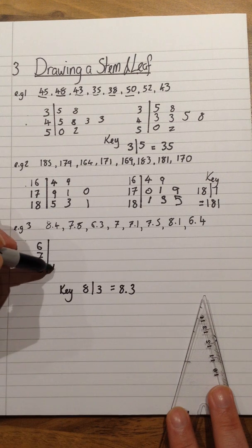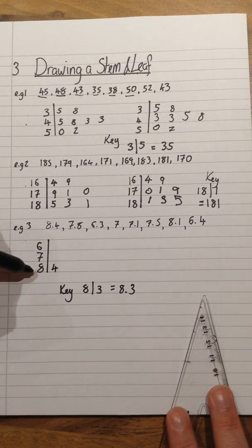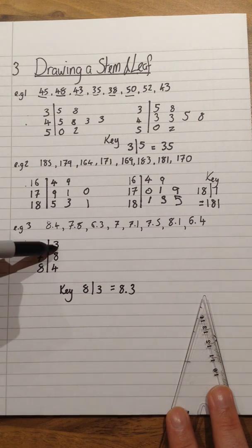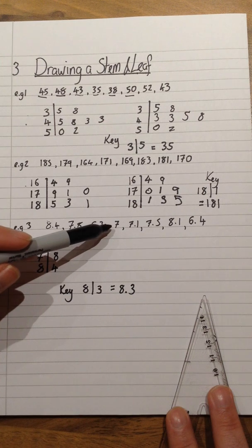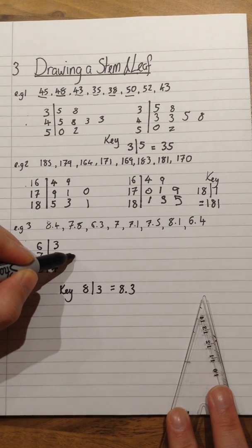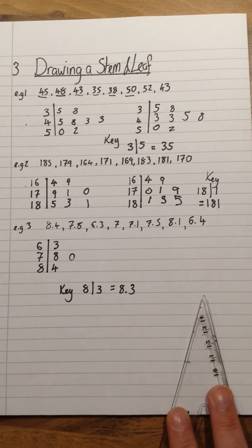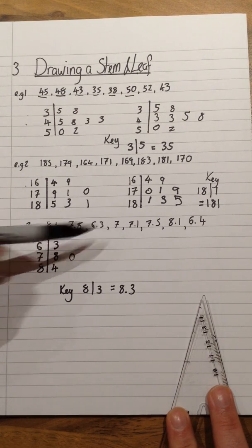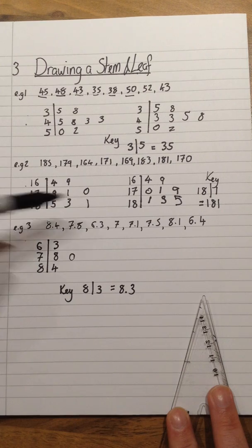So for 8.4, we put a 4 on the 8 row. 7.8, we'd have an 8 there. 6.3. For 7, there is no number after the decimal point. In other words, it is 0 after the decimal point. So I will still need to put a 0 on the 7 row, because otherwise it is not clear that the number 7 exists in the list on my table.